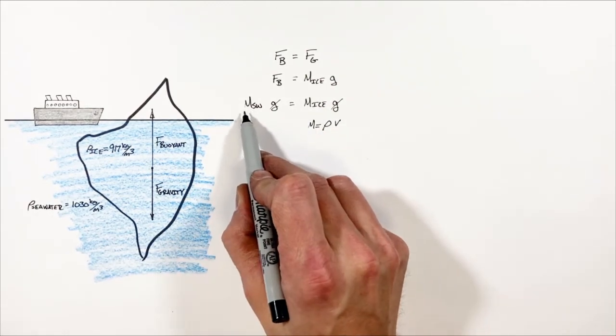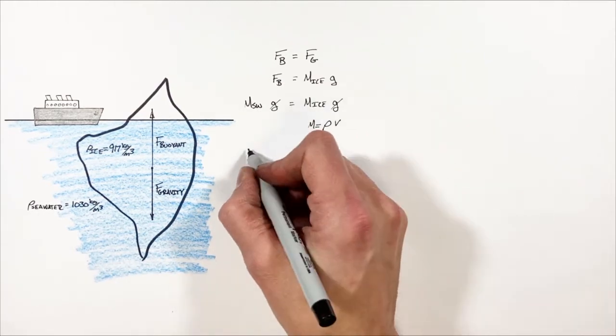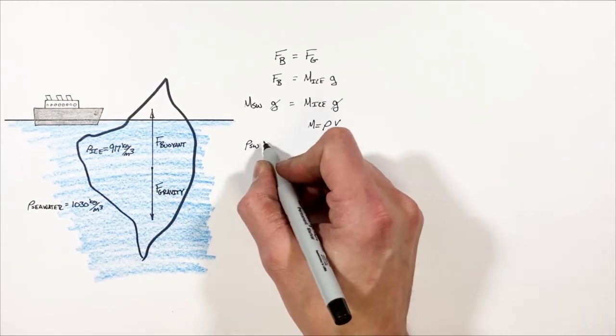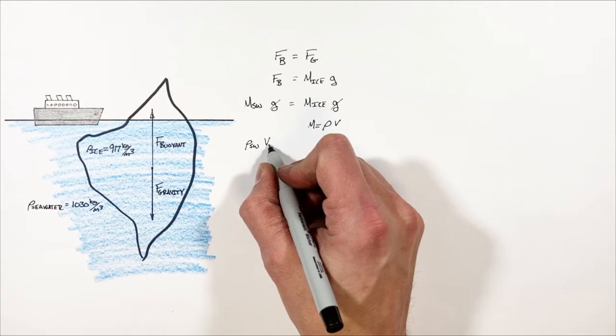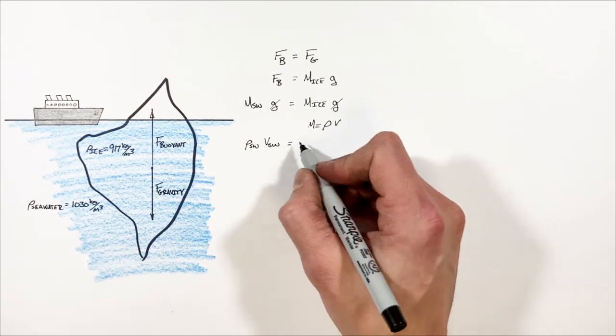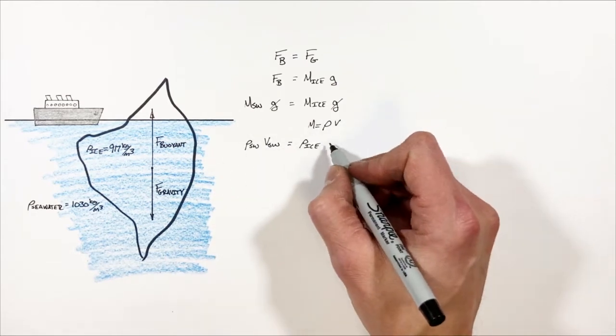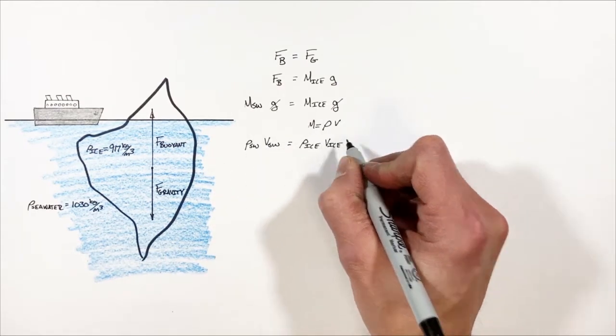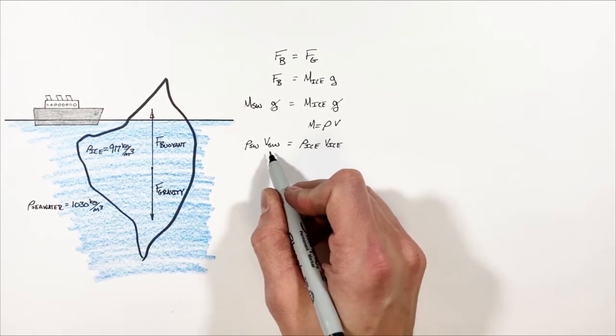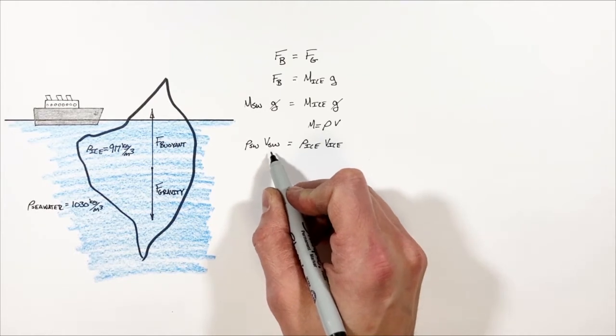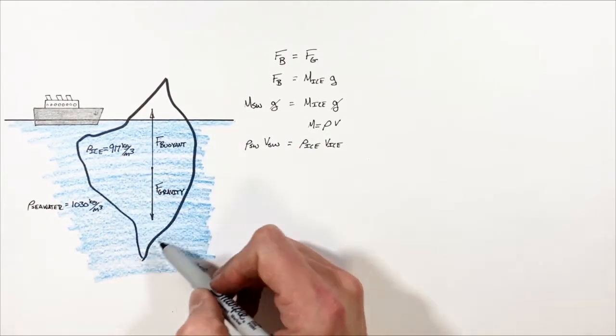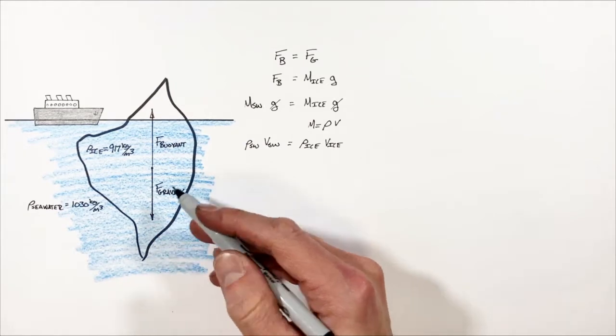So substituting in for the mass of the seawater, we're actually going to have the density of the seawater multiplied by the volume of the seawater displaced. And on the other side of the equal sign, we're going to have the density of ice multiplied by the total volume of the iceberg. And it's important to recognize this volume of seawater displaced is actually the volume of the iceberg which is submerged beneath the water.